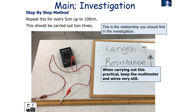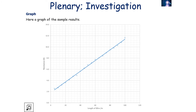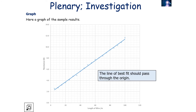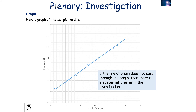You should find that as the length of the wire increases, the resistance also increases, as shown in the sample results. This gives a graph where the line of best fit is a straight line through the origin, because the resistance of the wire and the length of wire are directly proportional.